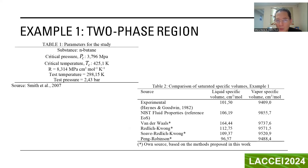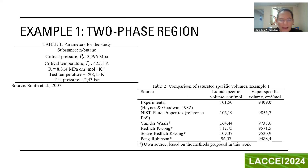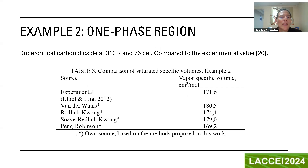In example one, we calculated a point in the two-phase region — both liquid and vapor specific volumes — and the results were compared with the experimental value and the result of a reference equation of state. In example two, we calculated one point in the one-phase region, and the result was compared with the experimental value.